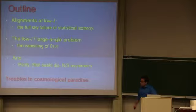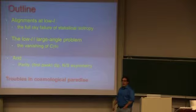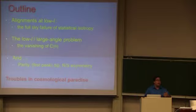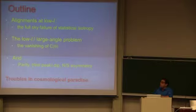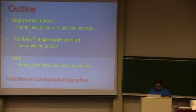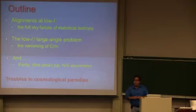I'm going to talk most about two things and mention a few others. I'll start by talking about alignments of multipoles at low L — or in other words, the full-sky failure of statistical isotropy. In cosmology kindergarten, we learn that the universe is statistically isotropic, and then we go ahead and analyze our data on that assumption. We should, of course, go back and check our assumption. Then I'll look at what's often called the low-L problem — I'd argue it's the large angle problem — which is the vanishing of the two-point correlation function. I'll also mention parity, the dip in the first peak, and north-south asymmetry, and argue that while we may live in a cosmological paradise, there may be hints that we're getting thrown out of the garden.